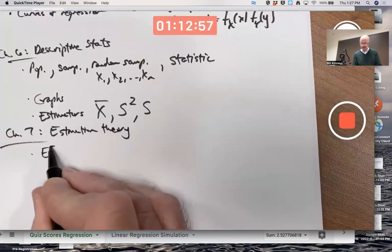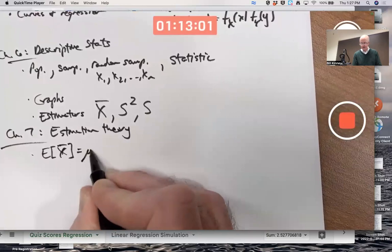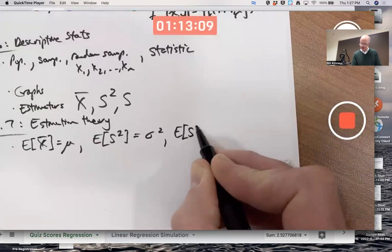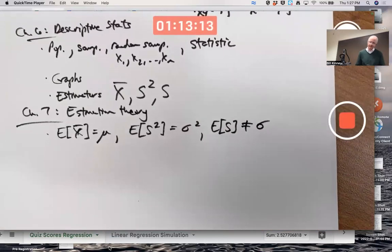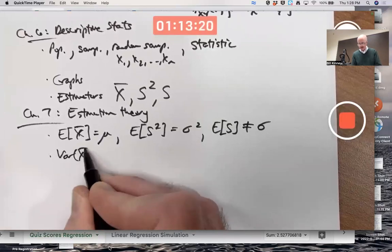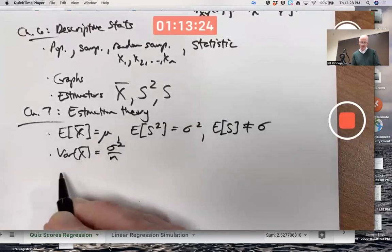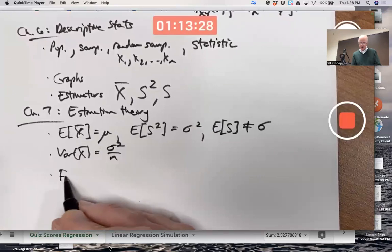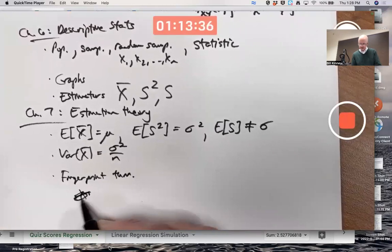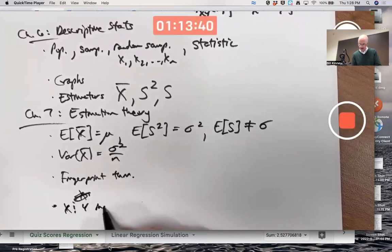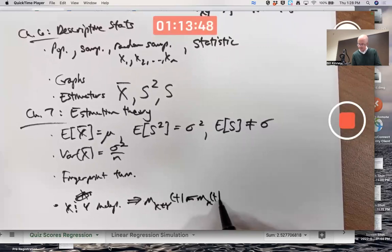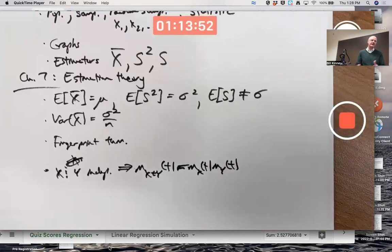And then in chapter seven, we get into the theory of estimators. Estimation theory. X bar is unbiased. What does that mean? It means its expected value is mu. S squared is unbiased. So its expected value is sigma squared. S you should know is not unbiased. The expected value of S is not sigma. Unfortunately. But true. You have to live with it. The variance of X bar is sigma squared over N. Then you have our favorite things like the fingerprint theorem. And the fact about moment generating functions that if X and Y. X and Y are independent. That implies the moment generating function of their sum is the product of the moment generating functions.